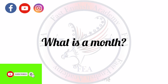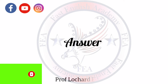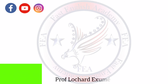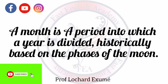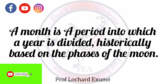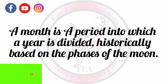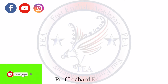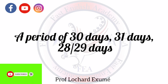Second: what is a month? The answer is a month is a period into which a year is divided, historically based on the phases of the moon. Or you can say a month is a period of 30 days, 31 days, 28 or 29 days.